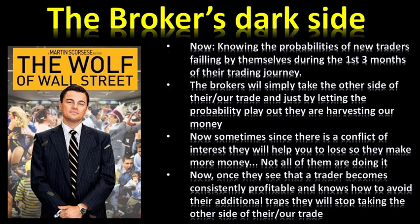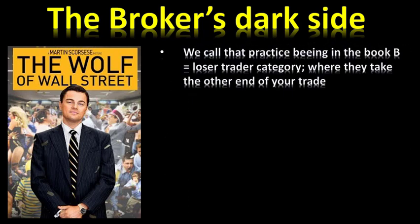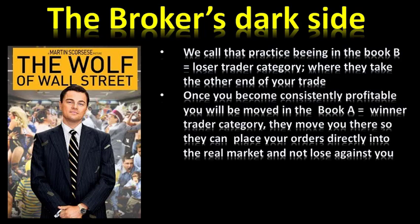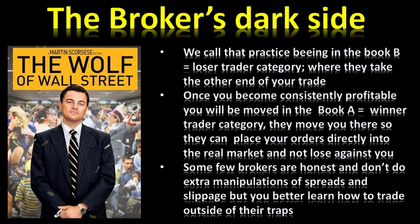Once they see that a trader becomes consistently profitable and knows how to avoid their traps, they will stop taking the other side of the trade. We call that practice being in Book B — the loser trader category — where they take the other end of our trade. Once you become consistently profitable, you will be moved to Book A — the winner trader category — so they can place your orders directly into the real market and not lose against you.